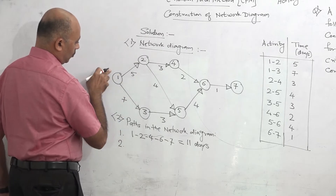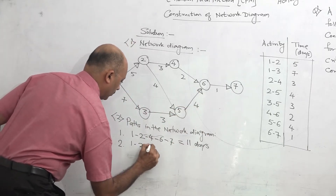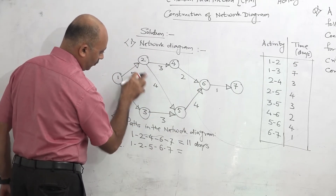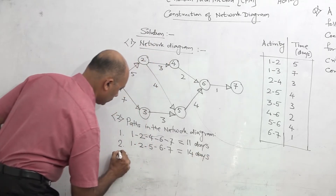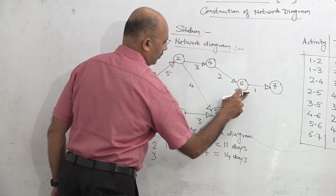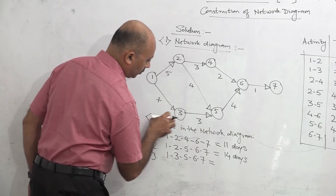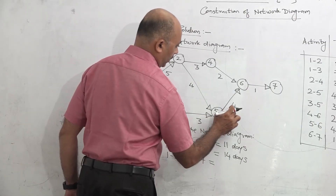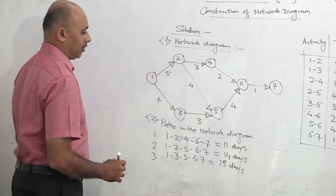The second path is 1-2-5-6-7: time is 5 plus 4 is 9, plus 4 is 13, plus 1 is 14 — so 14 days. The third path is 1-3-5-6-7: time is 7 plus 3 is 10, plus 4 is 14, plus 1 is 15 — so 15 days. We have 3 paths: 11 days, 14 days, and 15 days. Now out of these we will select the longest path.